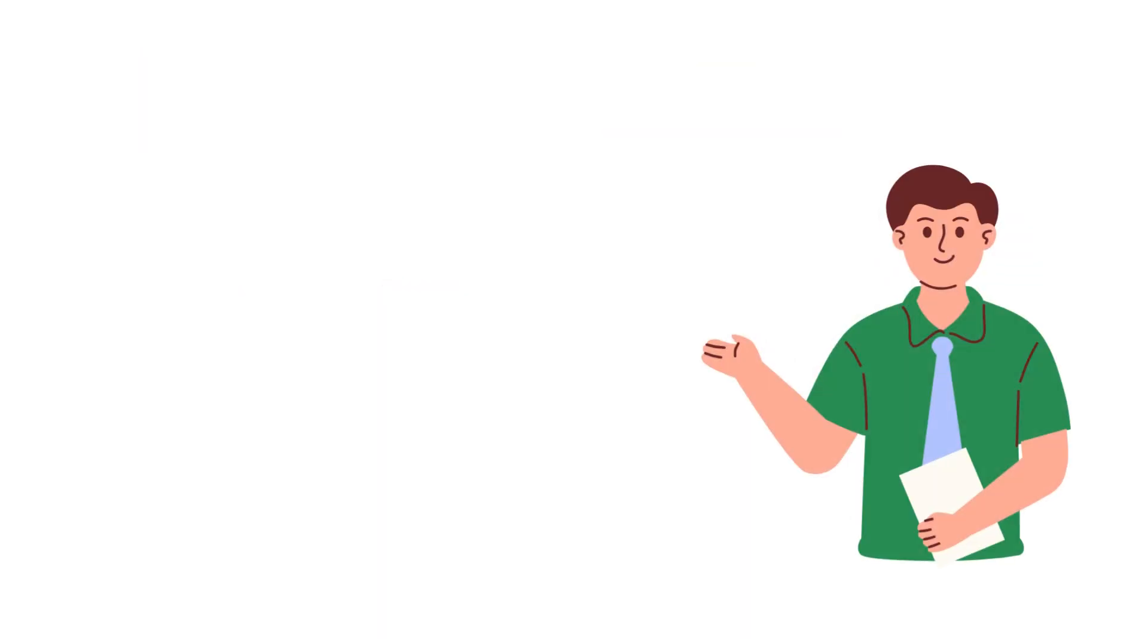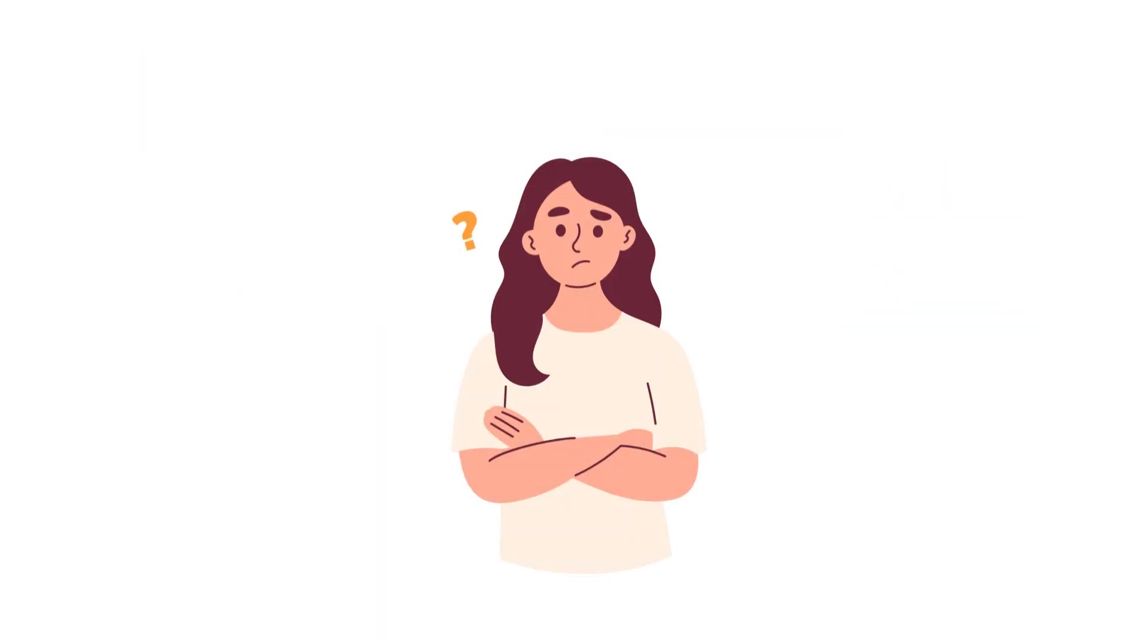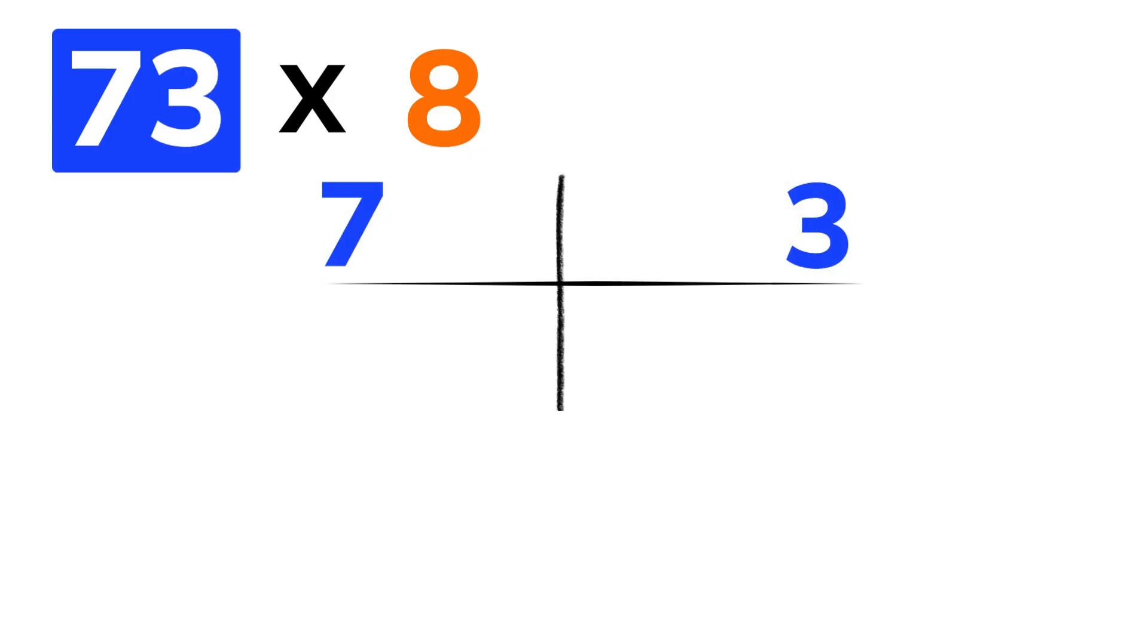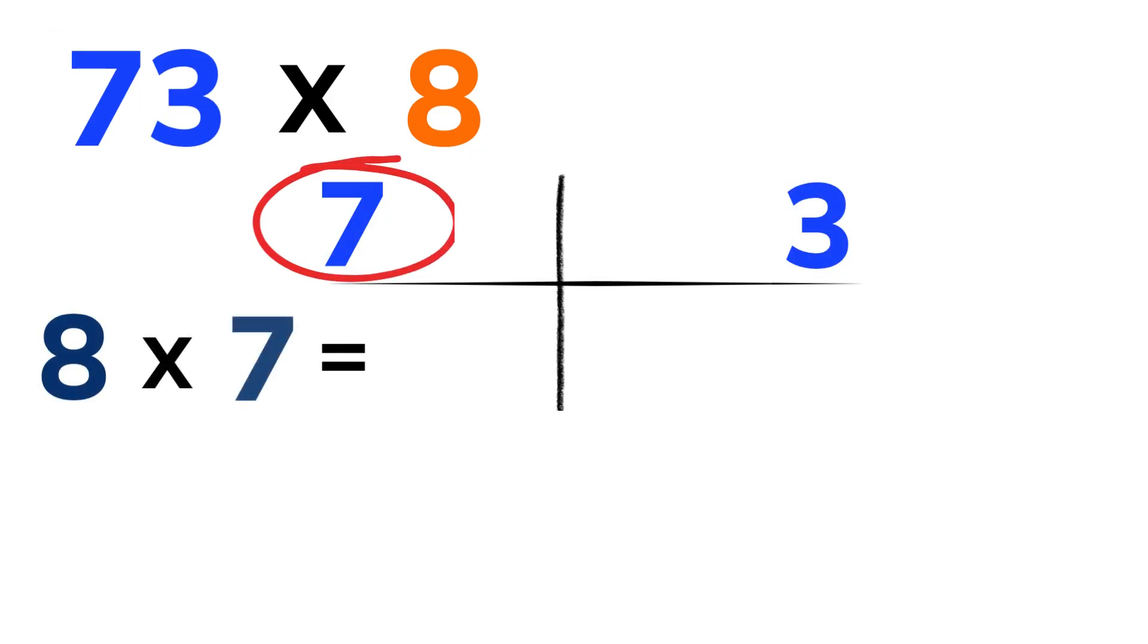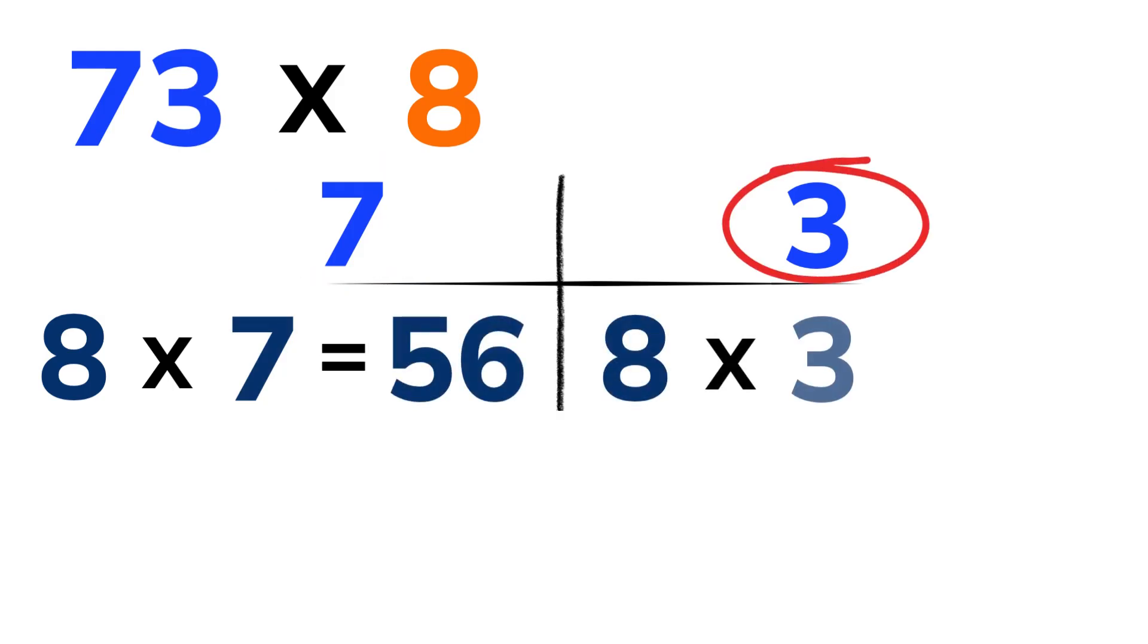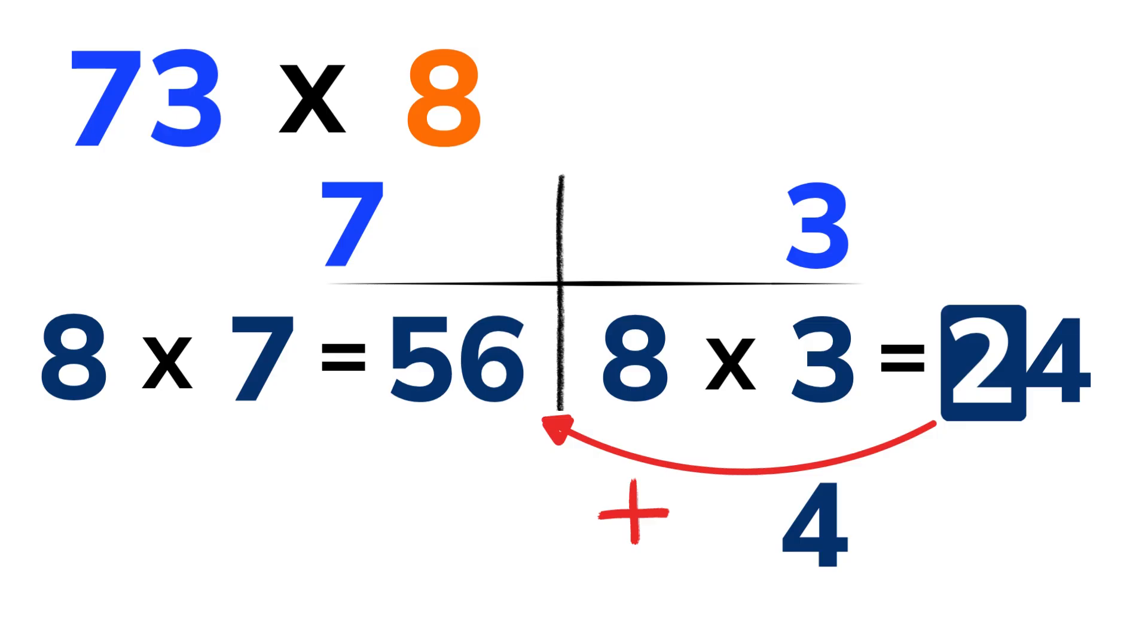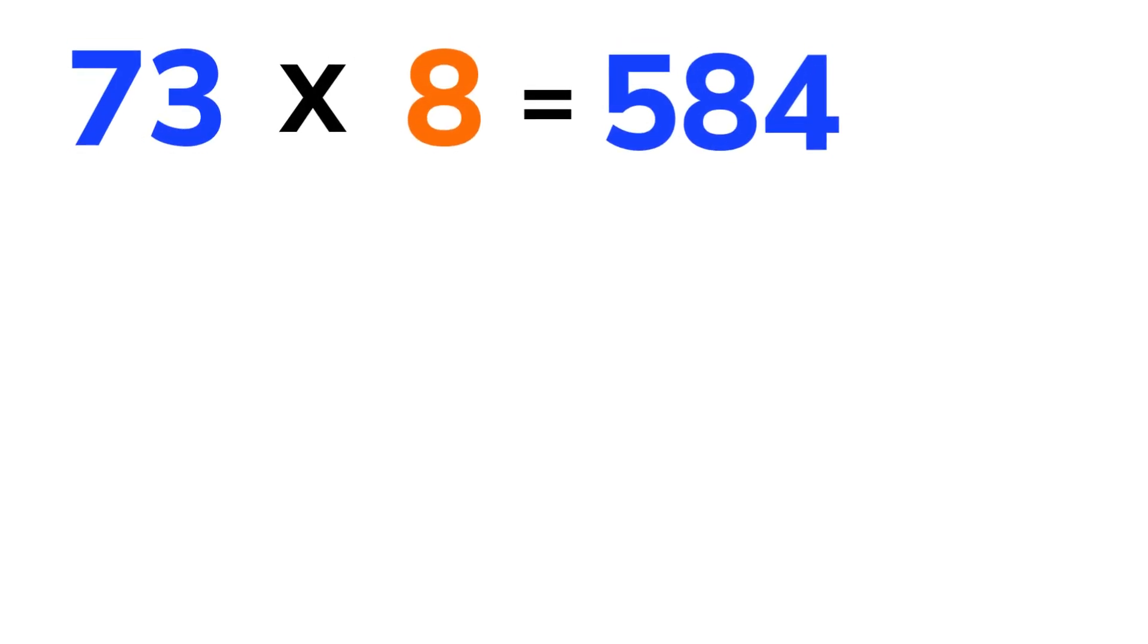Ready to try another one? This time a slightly tricky one. 73 times 8. Same rule. Write 73 as 2 parts, 7 and 3. 8 times 7 is 56, and 8 times 3 is 24. Now take the 4 from 24. Then take the 2 from 24 and add it to 56. 56 plus 2 is equal to 58. Here we go. 73 times 8 is equal to 584. Bam!